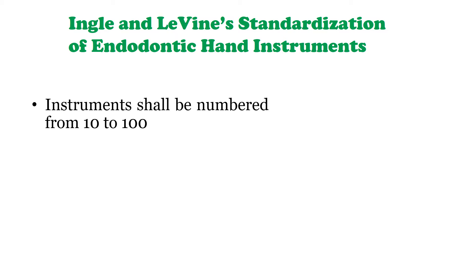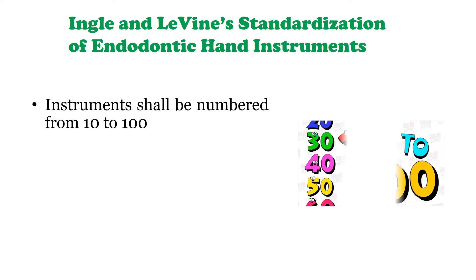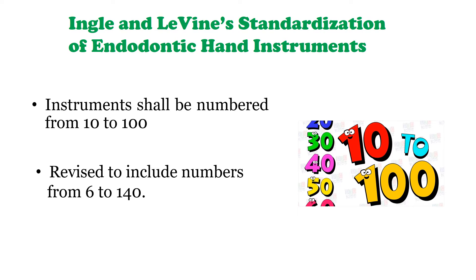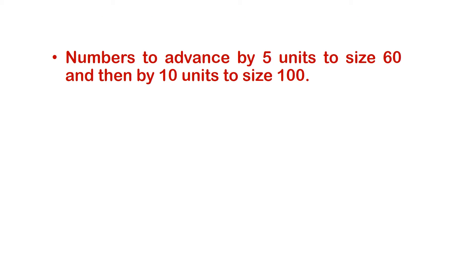Engel and Levine stated that instruments should be numbered from 10 to 100. This was later revised to include numbers from 6 to 140. So today, endodontic hand instruments are numbered from 6 to 140. Another specification is that numbers should advance by 5 units to size 60, and then by 10 units to size 100.